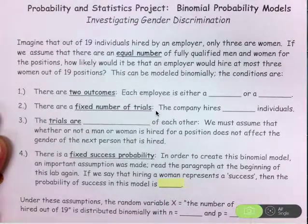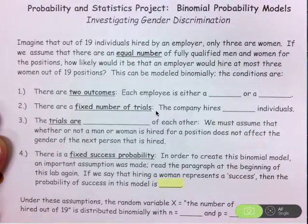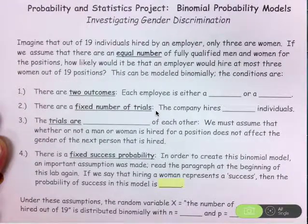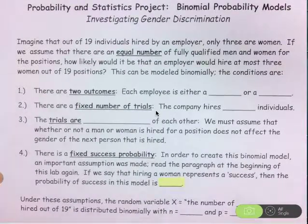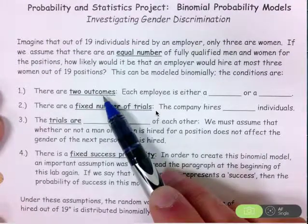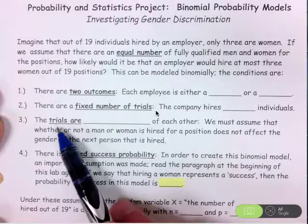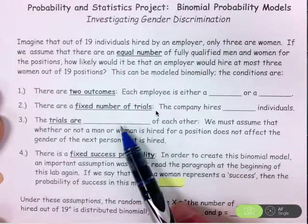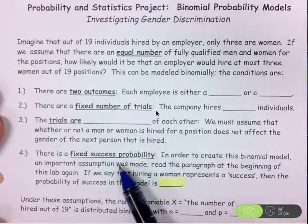Hi guys, I wanted to give you some hints regarding your gender discrimination project here. So the first four questions are about justifying that the four binomial conditions are met. So we have to be in a situation where there are two outcomes, a fixed number of trials, you need to know something important about those trials, and then you also need the fixed success probability.